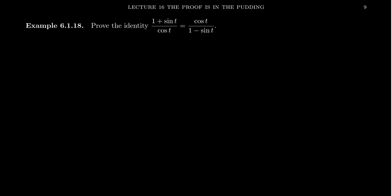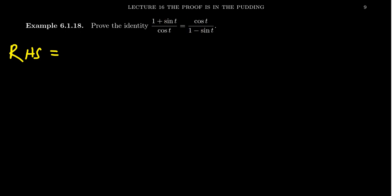Let's do one more example. Let's prove the identity 1 plus sine t over cosine t equals cosine t over 1 minus sine t. You can pick either side to work with. I'm going to pick the right-hand side. The reason I gravitate toward the right-hand side is that having a subtraction in the denominator is worse than having addition in the numerator, so the right-hand side is the more complicated one. We have cosine t over 1 minus sine t, and there's only one fraction — so how do I get a common denominator?